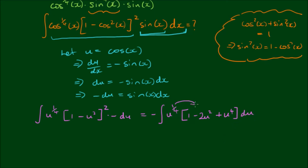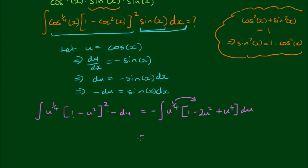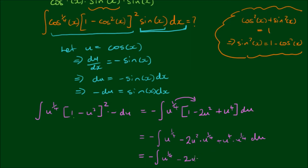Now let's expand the front term into the brackets. Expanding through, we have negative of the integral of u to the one-quarter, minus 2 times u squared times u to the one-quarter, plus u to the fourth times u to the one-quarter, du. Adding the indices, we have negative of the integral of u to the one-quarter, minus 2 times u to the nine-quarters, plus u to the seventeen-quarters, du.